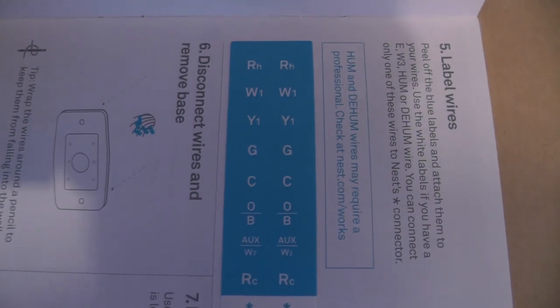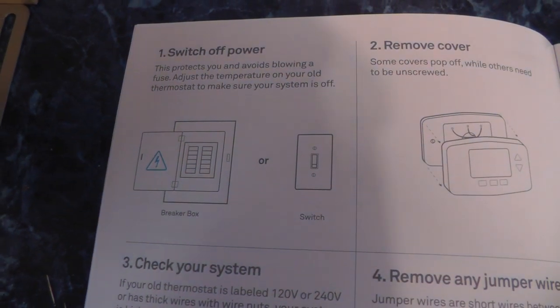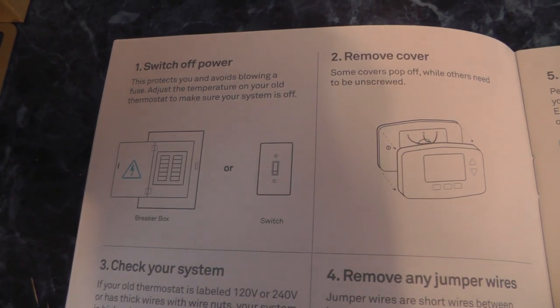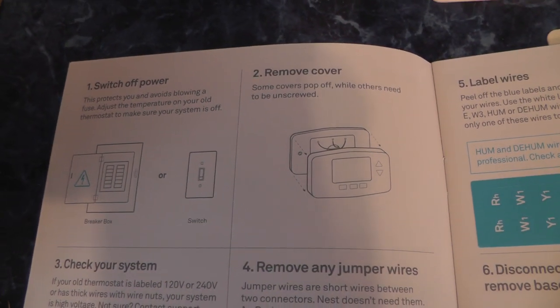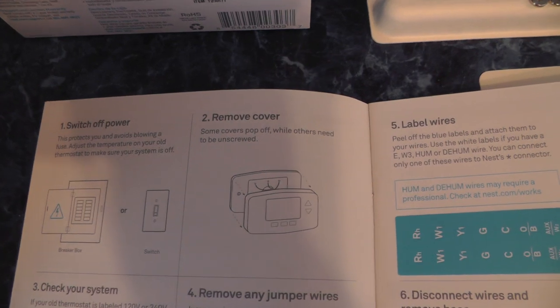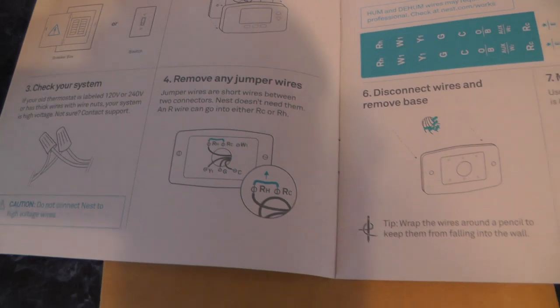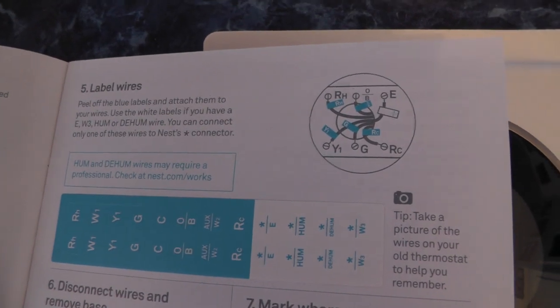Alright, so let's get started. Step one, turn the power off. So I got to run downstairs, do that, and then we're going to remove our old system. We're going to label the wires and unhook them. And the manual shows that. Alright, so let's go turn some power off.